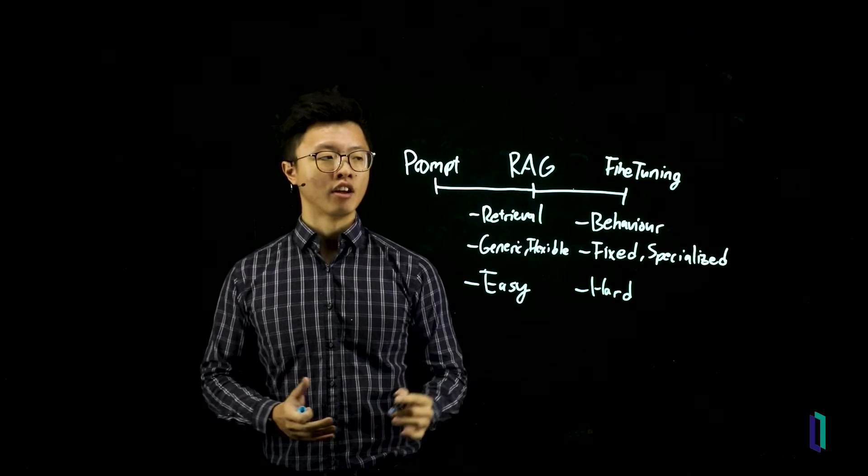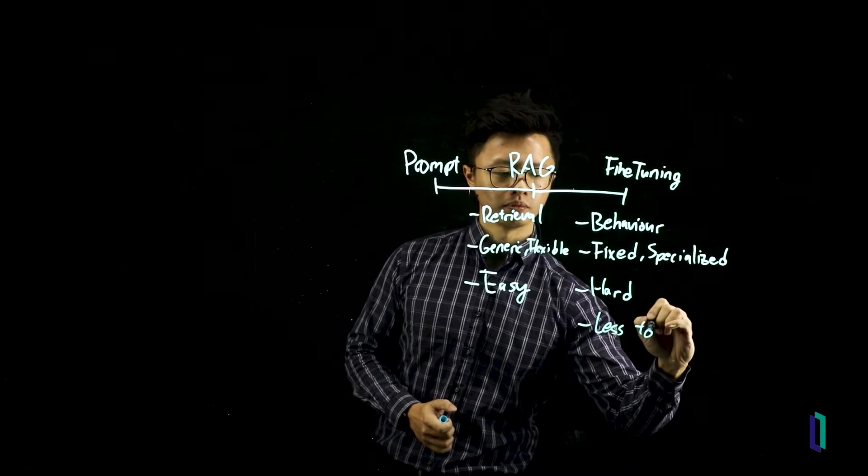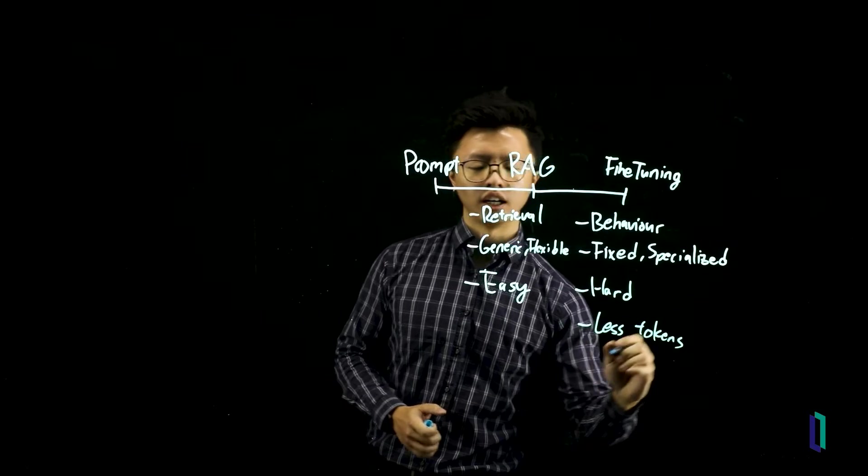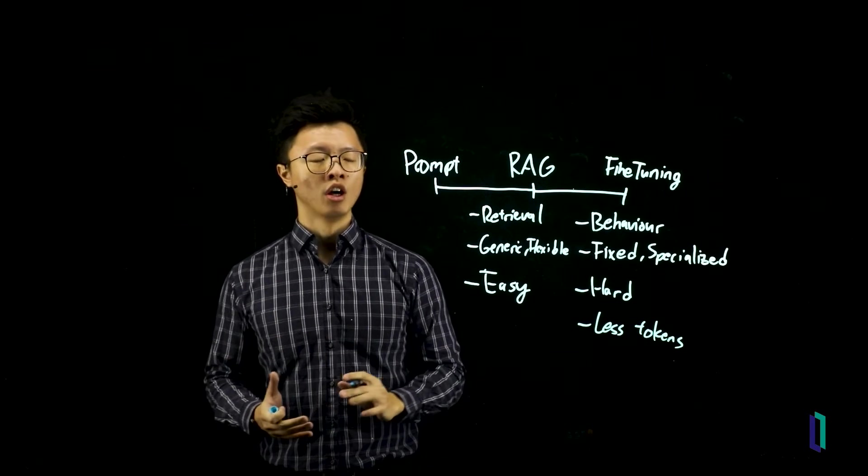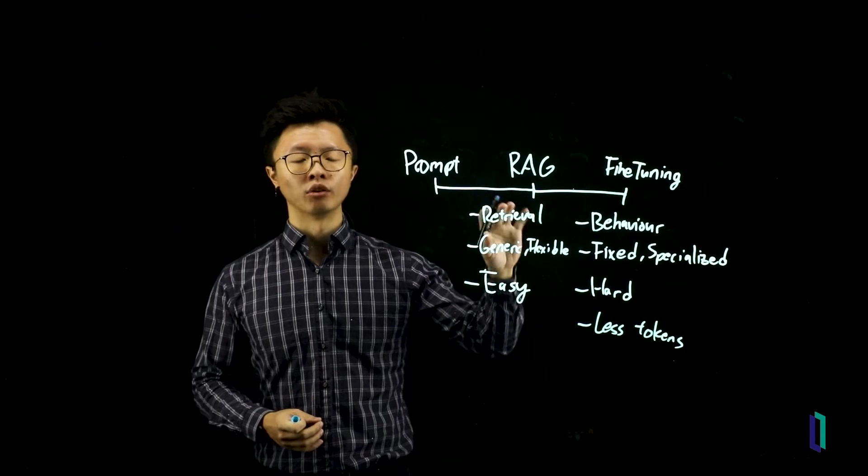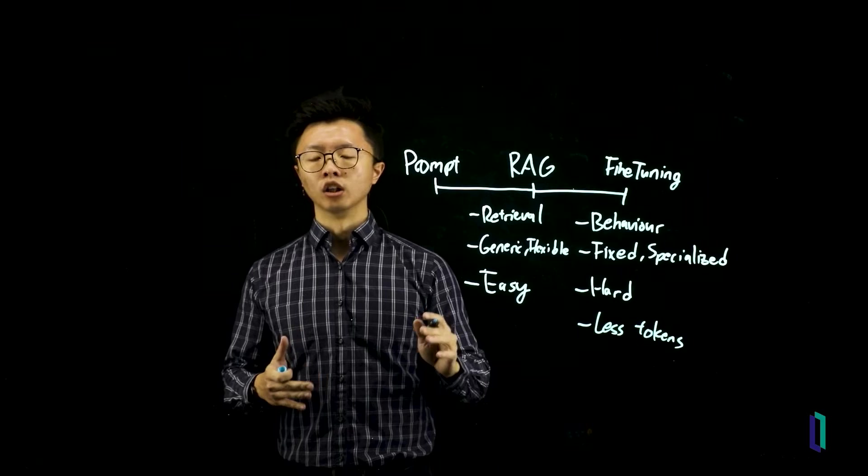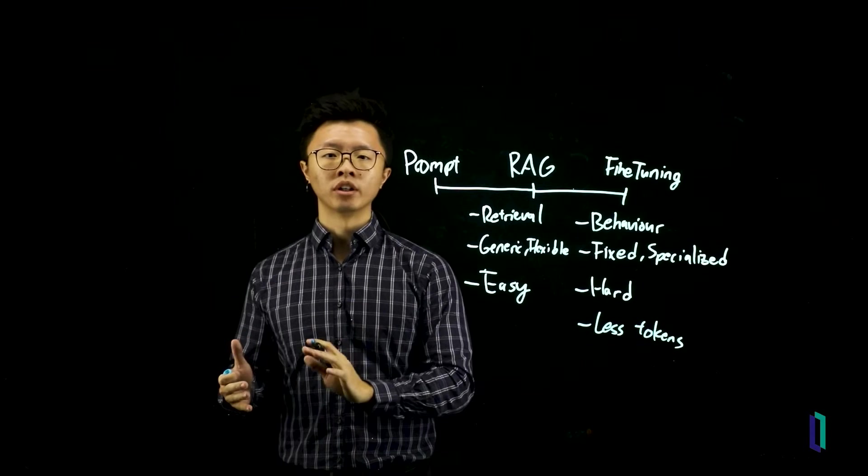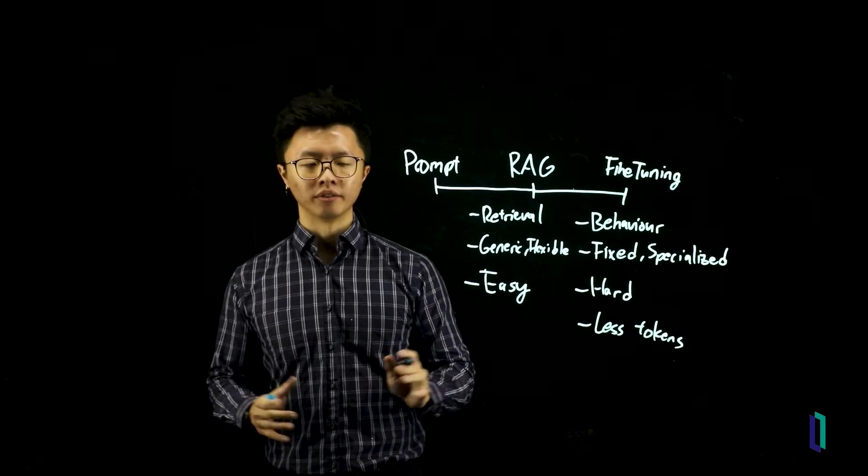That being said, fine-tuning has the potential to use less tokens per request. In a RAG, you typically have to give an AI a good amount of information before it can deliver a response. Whereas in fine-tuning, all of that is already done when you train the model. So less tokens will mean a lower latency, which may be important for user-facing applications, and potentially some cost savings in the long run.